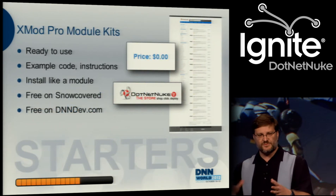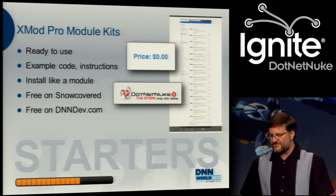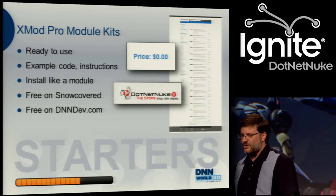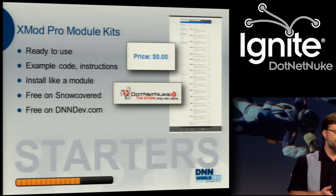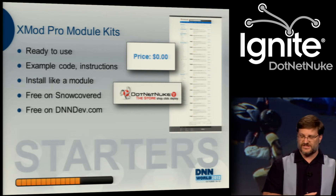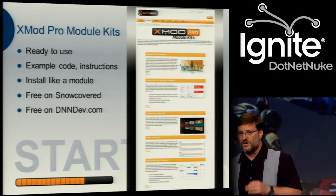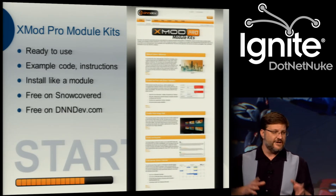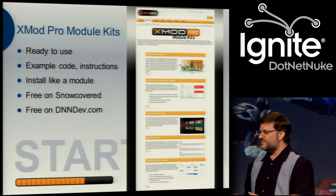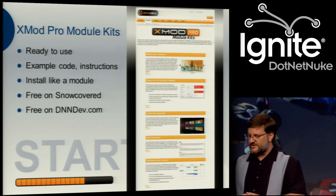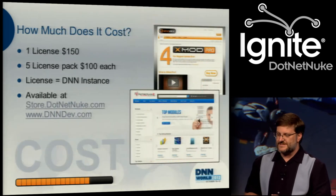Take these three things together and you can build just about anything. But where do you start? DNNDev has produced module kits — they're like the instruction kits that come with a box of Legos. They're ready-to-use example code and instructions that tell you how to do what you want to do. You'll find them for free on the DotNetNuke store and on DNNDev.com. Download them, take them apart, and figure out how they were built. There are lots of module kits out there, and some of the ones we've used in presentations are all available for free.